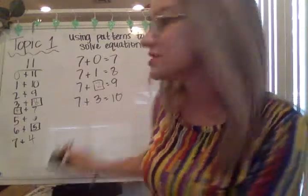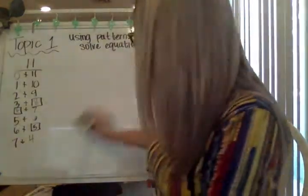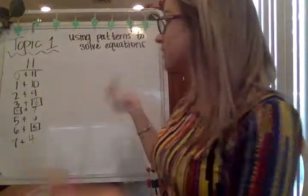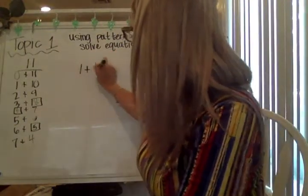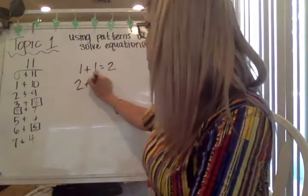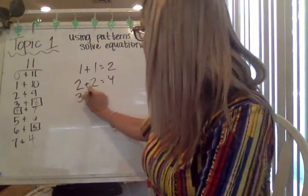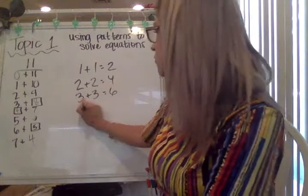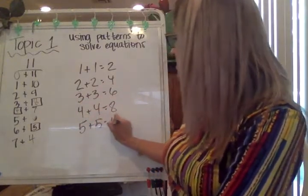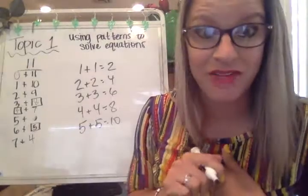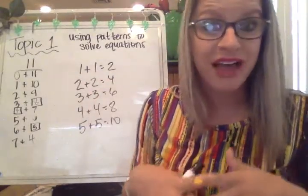I also want you to think of the doubles and the near doubles that you already know. So something that you should remember are a lot of these doubles facts. So one plus one is two. Two plus two is four. Three plus three is six. Four plus four is eight. Five plus five is ten. I don't want to keep going forever and ever and ever, but think of those doubles facts that you know. Now, if you were in the classroom, you would see our doubles chart on the wall as well.